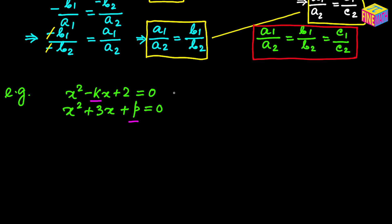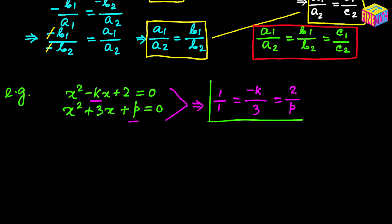Because they both have common roots, we can apply our condition. So a₁/a₂ = 1/1, b₁/b₂ = −k/3, and c₁/c₂ = 2/p. Setting these equal: 1/1 = −k/3 = 2/p. That is the relation we get from the two equations and the theory when both equations have two common roots.